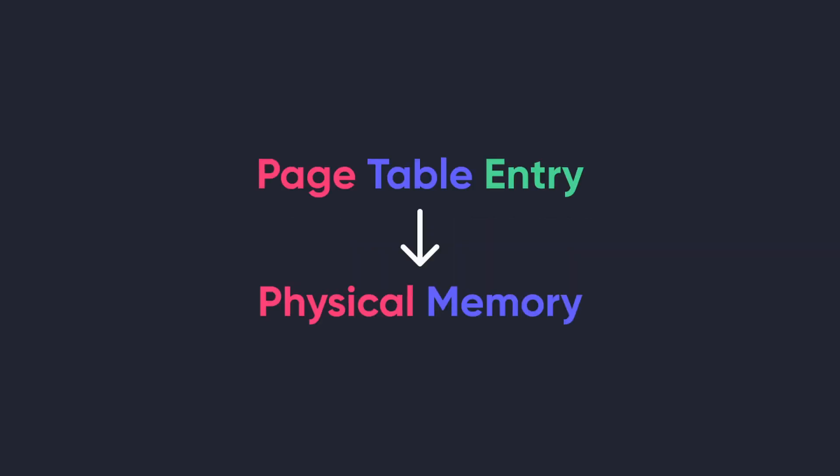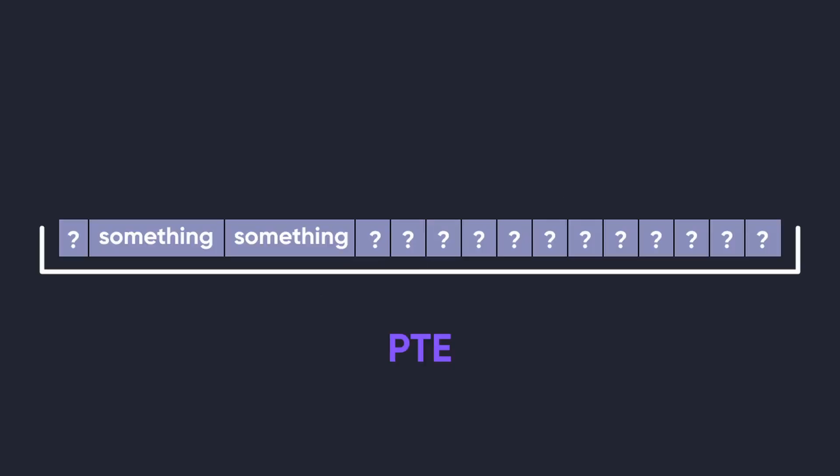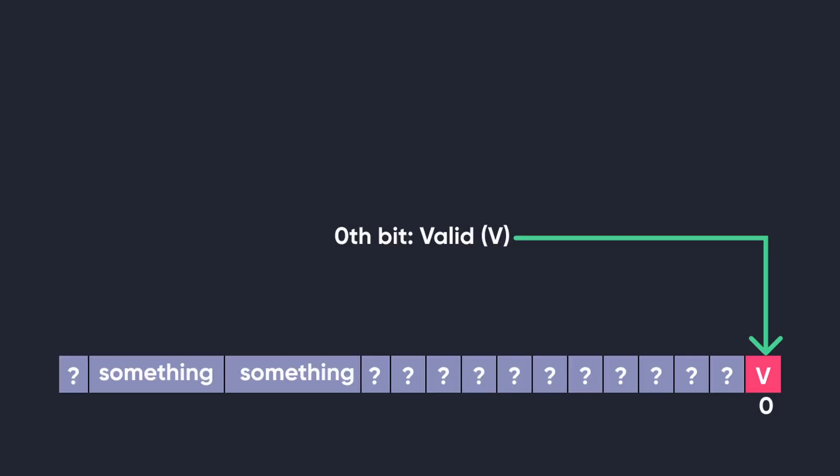Now we're looking at one more important and interesting aspect of the translation of virtual memory addresses — the information which the page table entry stores. This is important because, as mentioned earlier, the page table entry directly points to the address of the RAM. Let me start decoding each of the bits you see here.